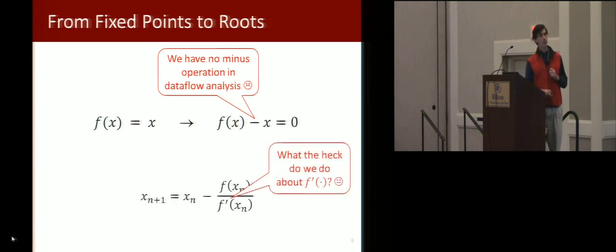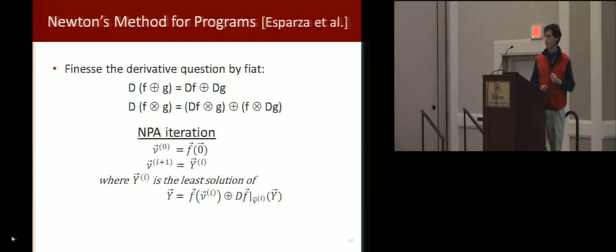Then there's also the problem about this derivative. What the heck do we do about f prime? So that one is actually easily solvable. We don't introduce any kind of limits as delta x approaches zero. We just finesse the derivative question by fiat. We define an operator that has the usual kind of rules.